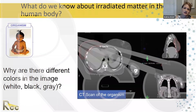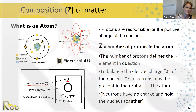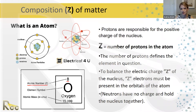On the right we have a CT scan showing axial, sagittal, and coronal views through the lower thorax. The different gradations of black, white, and gray represent different tissues in the body. To understand what produces these grayscale variations, we need to understand the composition of matter. The nucleus of an atom is composed of protons and neutrons; protons have a positive charge balanced by the negative charge of electrons orbiting the nucleus. The Z number equals the number of protons in the atom.